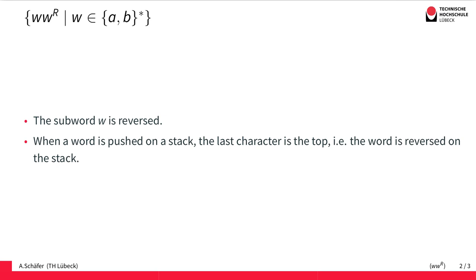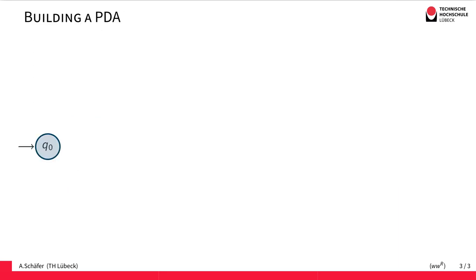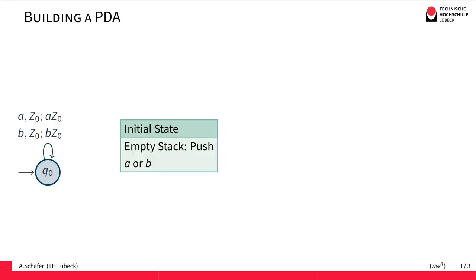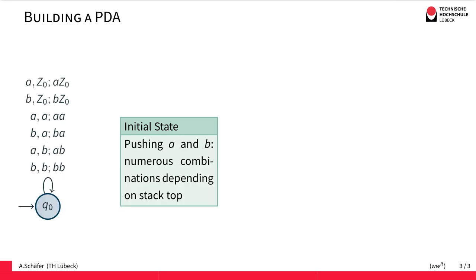However, we don't have any indication here in our language now. But we can simply guess the middle because we are using non-deterministic PDAs here. Now to start the construction for building the PDA, again we start with an initial state, and in this initial state we push all the A's and B's that we see. There are numerous combinations possible and we simply put all of them onto the stack.